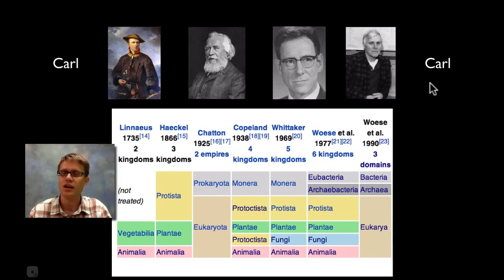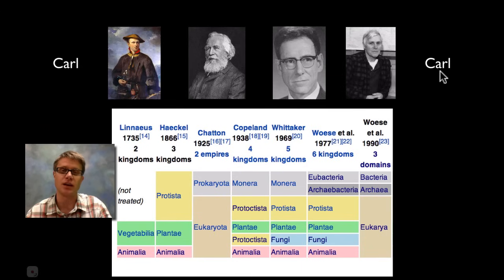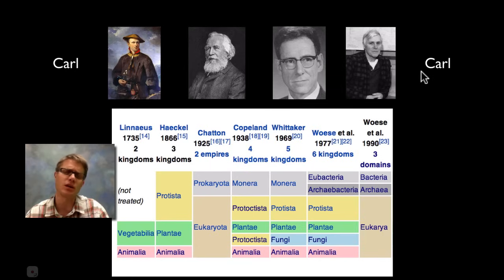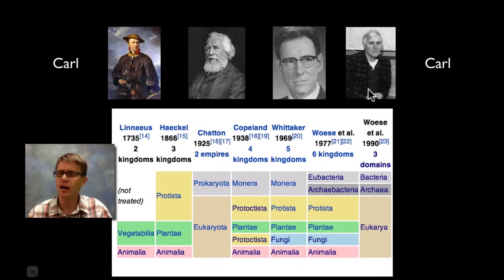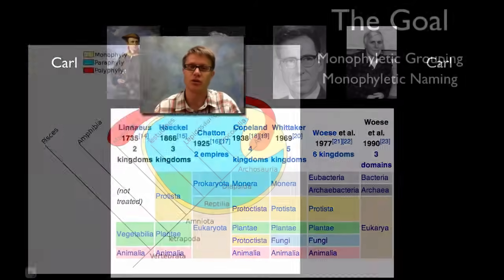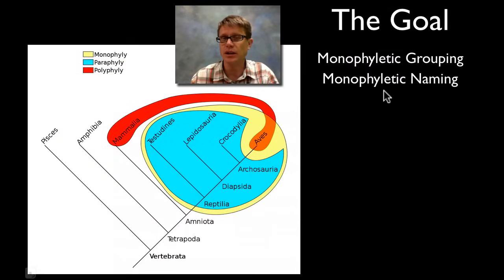Now finally we have a three-domain naming system today, and this will probably change in the future. But we have another Carl — Carl Woese — who came up with this idea of how to classify life. So we've gone Carl to Carl and changed quite a bit, especially with technology. Because Carolus Linnaeus didn't believe Darwin was right — he didn't believe in evolution. And now we build our whole naming system on the idea of natural selection and evolution over time.